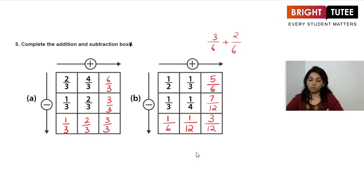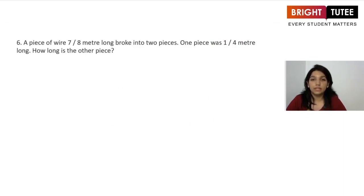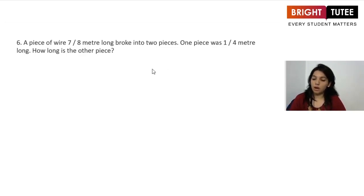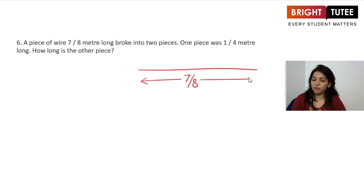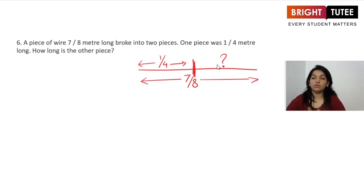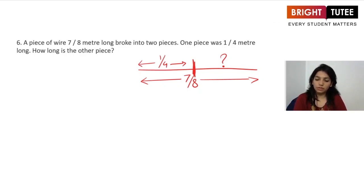Now a word problem: a piece of wire is 1 and 7/8 meters long and broke into two pieces. One piece is 1/4 meter. How long is the other piece? Imagine the full wire measuring 7/8 (the mixed number). The broken part is 1/4. To find the remaining part, subtract: 7/8 take away 1/4.